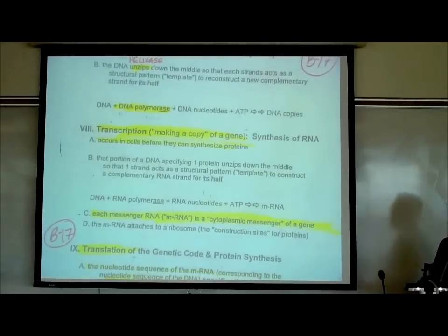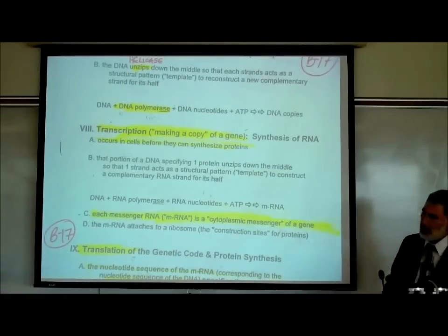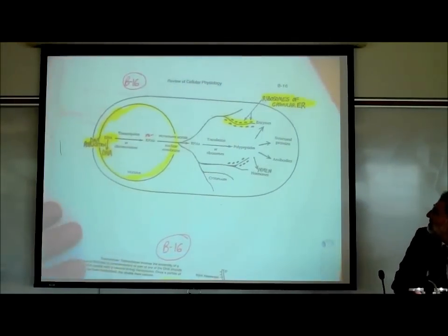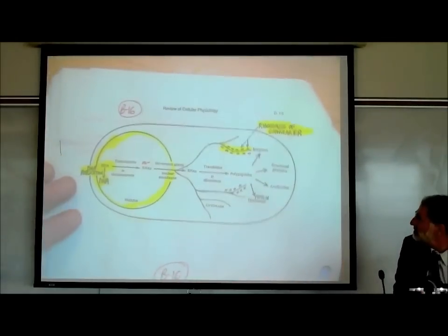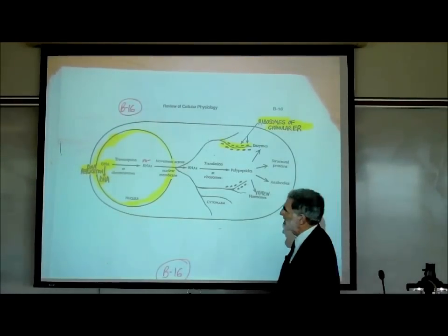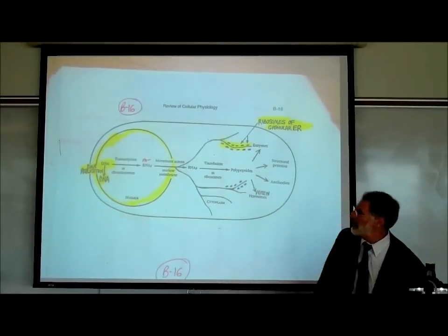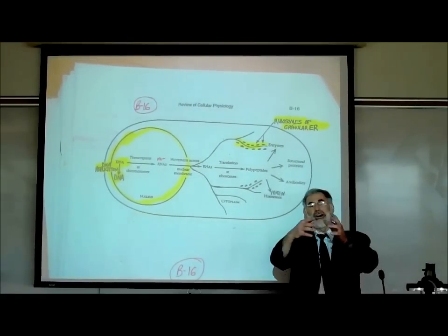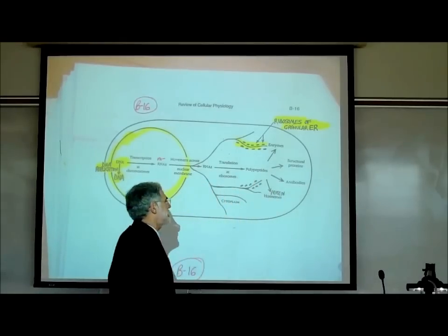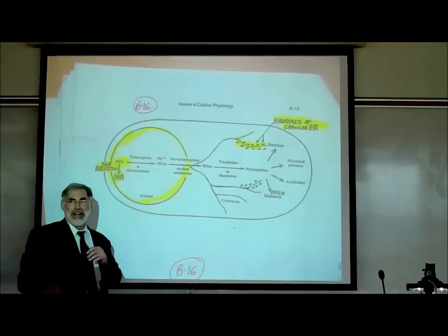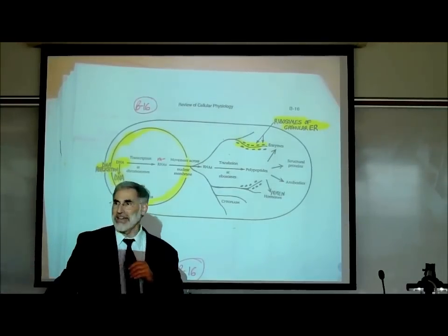Before we talk about transcription and translation, which should be a review for you, let's try to understand the big picture and look at page B16. This shows us that cells come in different shapes and sizes. Here's the cell and here's the nucleus. This is a eukaryotic cell — we're talking about human cells, not prokaryotic bacteria.